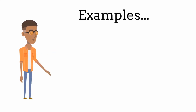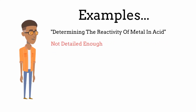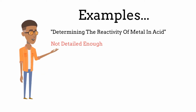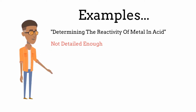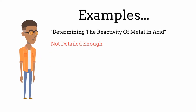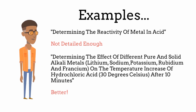An aim such as 'determining the reactivity of metal and acid' is too vague. What metals are you investigating? Are the metals a powder or are they ribbons? What acid will the metals react with? What is the temperature of the acid? These are just a few examples of how you can be more specific and detailed with your aim. A better alternative can be seen on the screen now — feel free to pause the video.